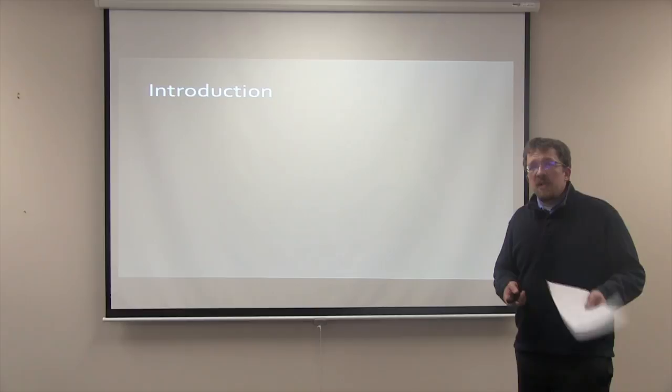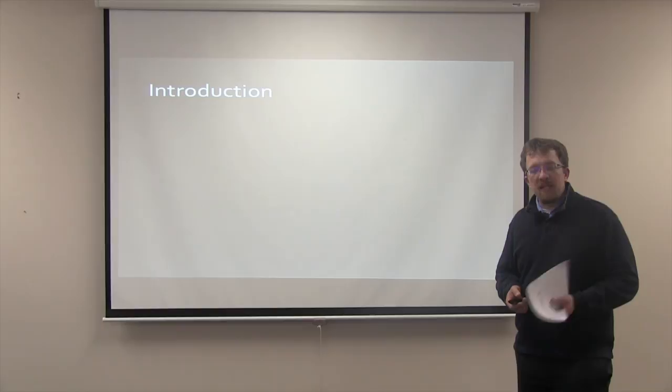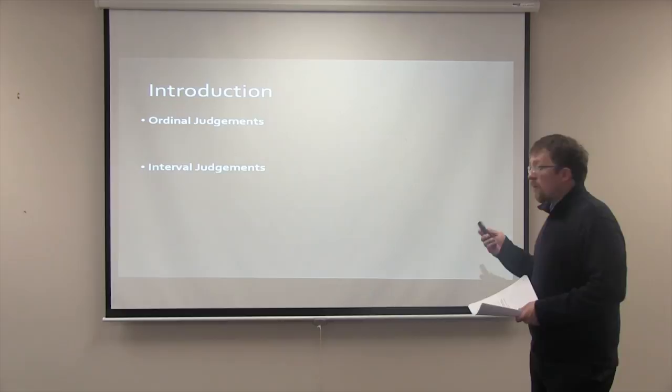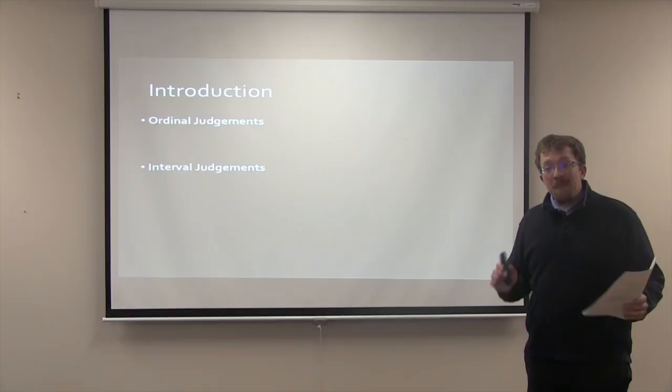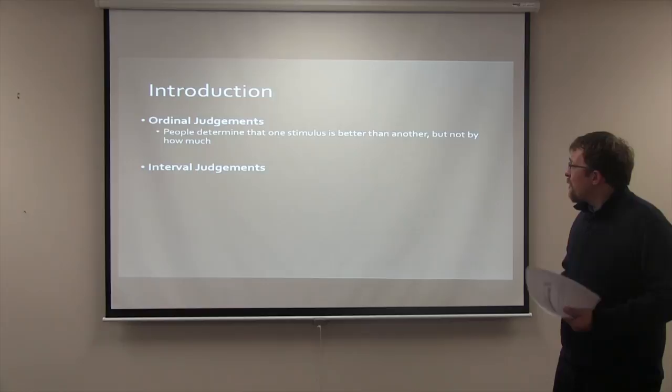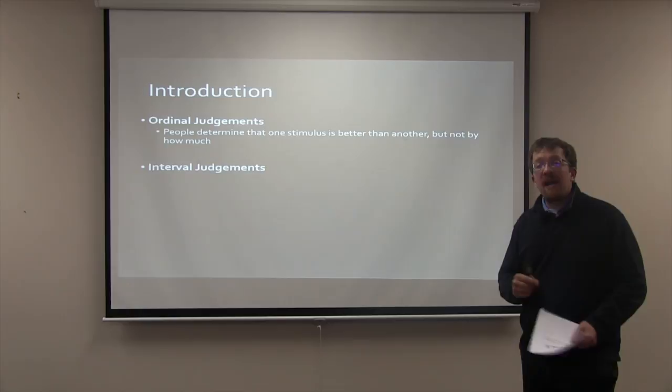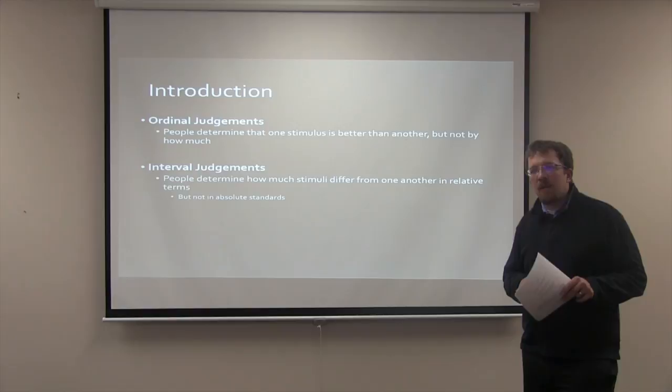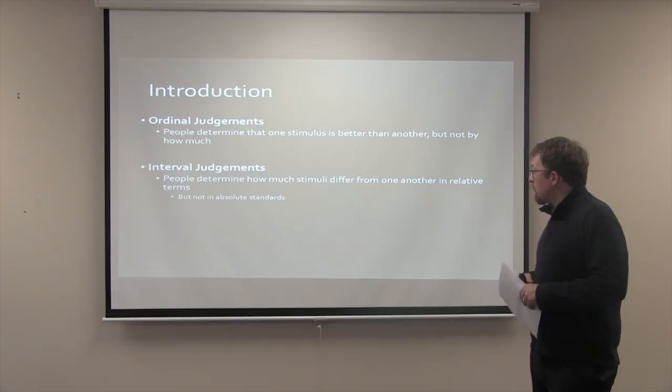Related to this point, other researchers have shown that when assessing a stimulus, people represent where in the distribution that stimulus lies rather than the absolute value of that stimulus, by making either an ordinal judgment or an interval judgment. The differences between these judgments are subtle: an ordinal judgment refers to the idea that people can determine that one stimulus is better than another, but not by how much. Whereas an interval judgment suggests that people can determine how much stimuli differ from one another in relative terms, but not in relation to absolute standards.